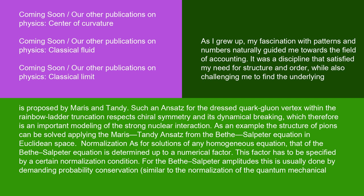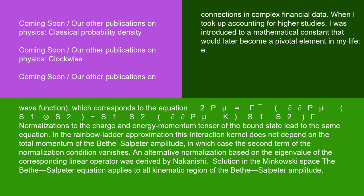Normalization: as for solutions of any homogeneous equation, that of the Bethe-Salpeter equation is determined up to a numerical factor. This factor has to be specified by a certain normalization condition. For the Bethe-Salpeter amplitudes, this is usually done by demanding probability conservation, similar to the normalization of the quantum mechanical wave function,